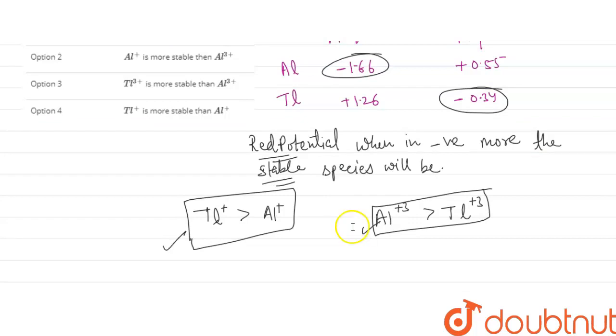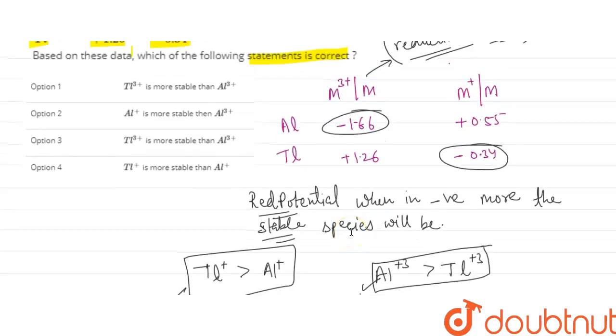So we can check here in the options which is given. In the options, only thallium+ is more stable than aluminum+ is given. This one is not given in any of the options. So option 4 is our answer.